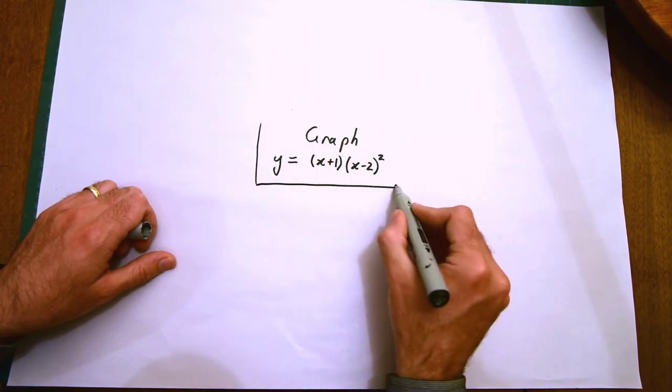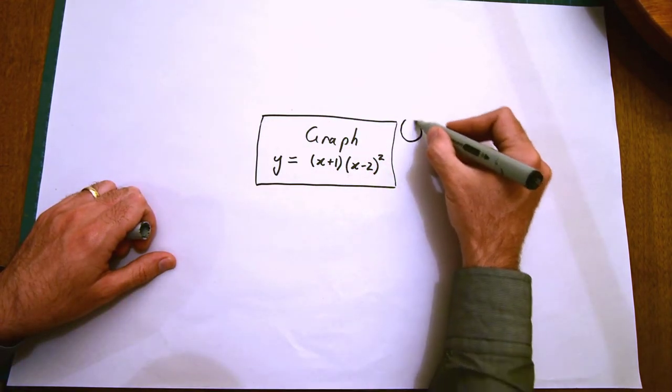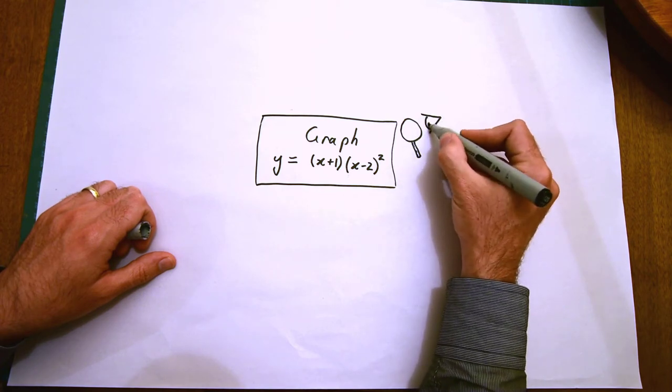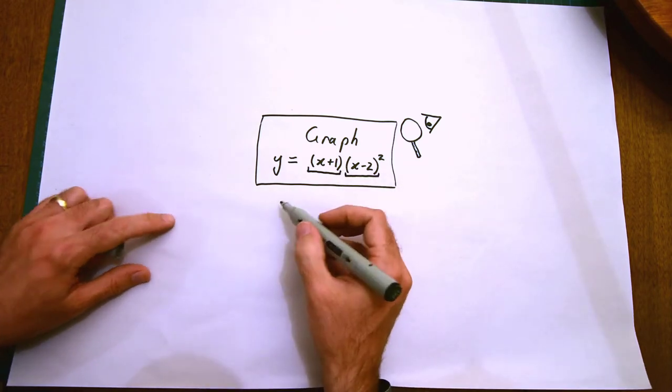We say it's a repeated factor because the same linear factor occurs twice. Let's take a close look through our little magnifying glass. The equation has two main parts, and we're going to deal with each part separately.